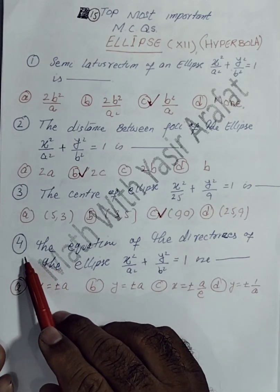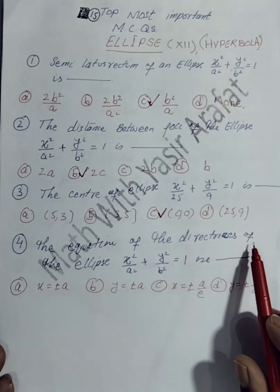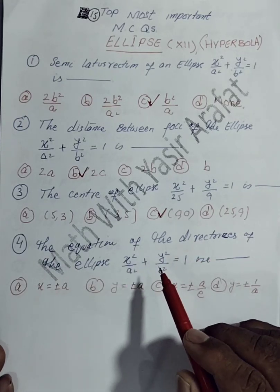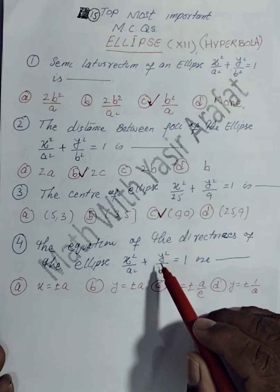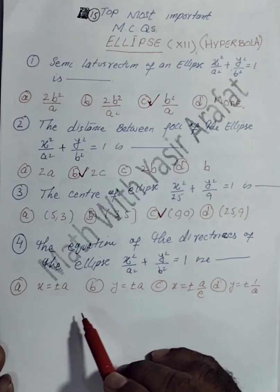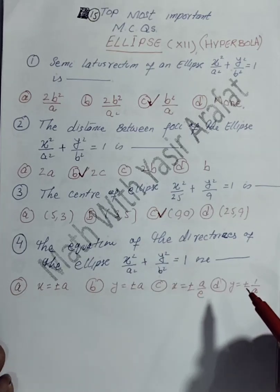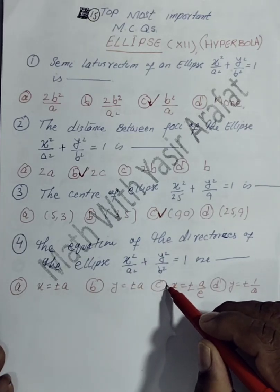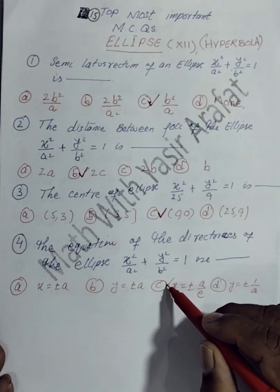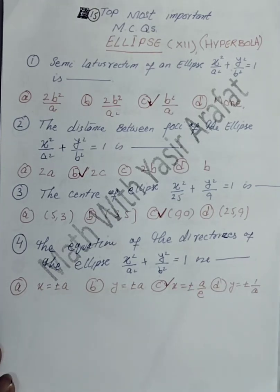Now the fourth MCQ: the equation of the directrices of the ellipse x²/A² + y²/B² = 1. Since this ellipse is along the x-axis, the equation of the directrices will be x = ±A/E.